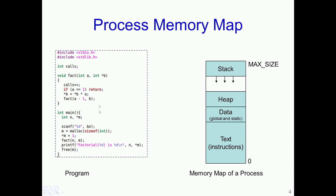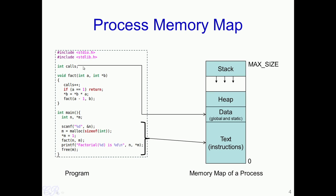Various parts of this program when executed get mapped into the various sections of the process. For instance, all the instructions such as those involved in the function main will get mapped into the text section of the process. Similarly, other functions such as the fact function — the instructions involved in this will also get mapped into the text section. Now, the global data and also static data gets mapped into the data section of the process, which is divided into two parts called initialized and non-initialized sections.